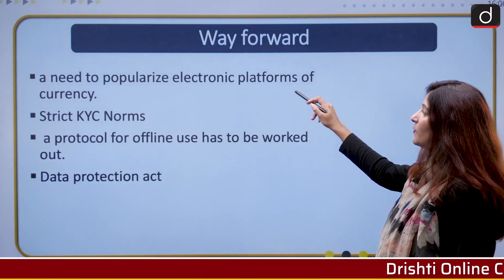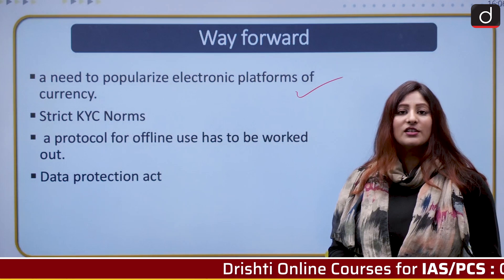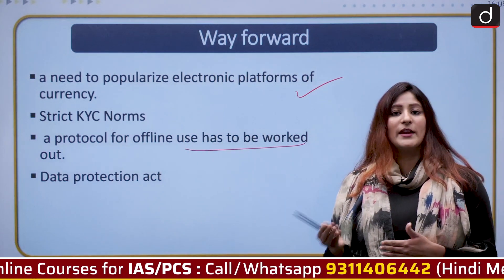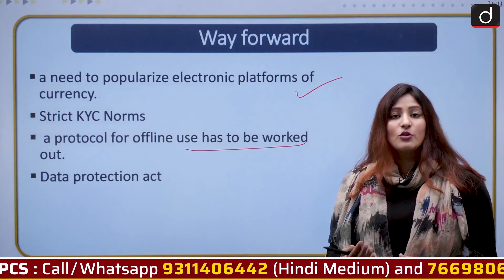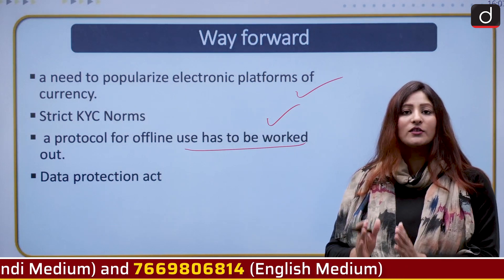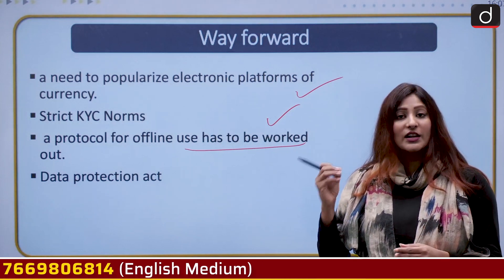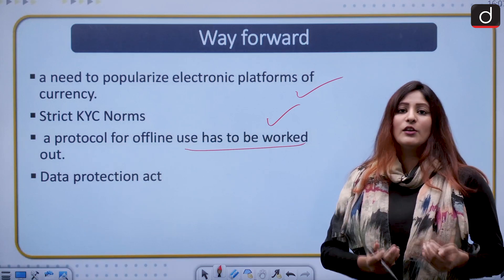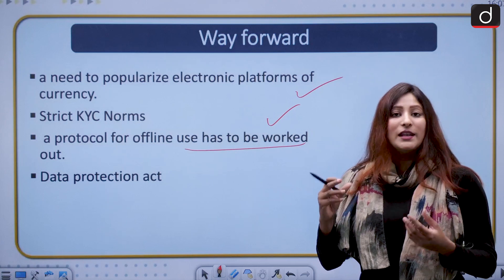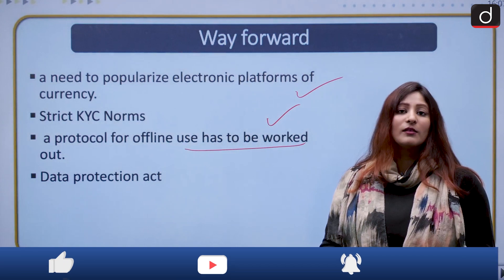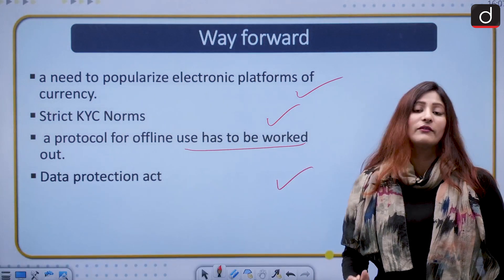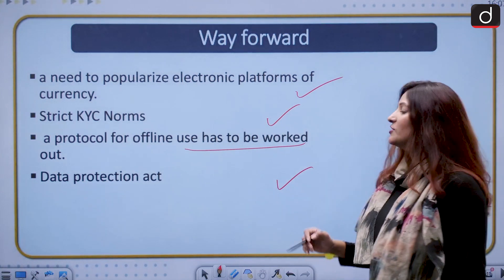The way forward: there is a need to popularize electronic platform currency, specifically in rural areas where digital penetration is low and a digital divide exists. A protocol for offline use also has to be worked out, so that payments can be made even where internet penetration is not satisfactory. We also need stricter KYC norms — Know Your Customer norms have to be widened to ensure they can track anyone, so that in case money laundering or terrorist financing occurs through digital currencies, there are no loopholes that can be bypassed. Finally, a Data Protection Act needs to come into the picture so that the privacy of individuals is protected at the utmost level, in accordance with Article 21.